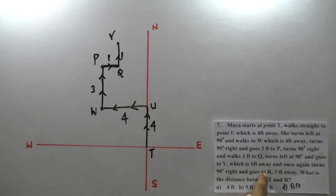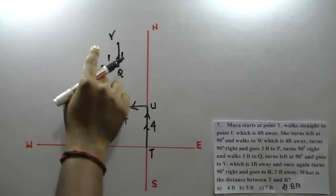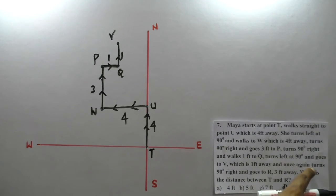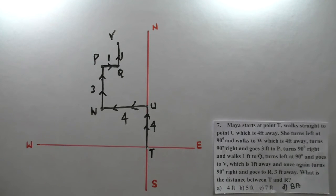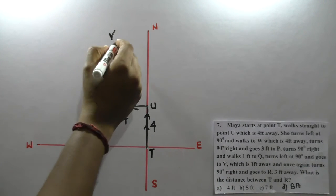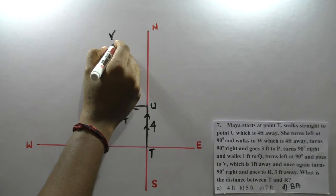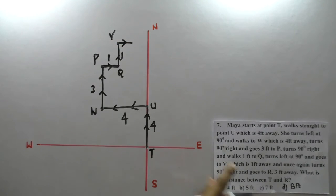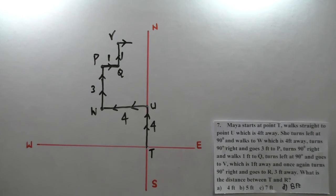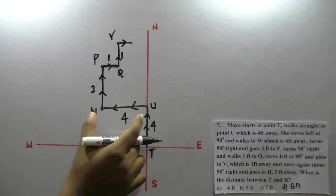And goes to R. Again turns 90 degrees right and goes to R, three feet away. She reaches point R, three feet away.